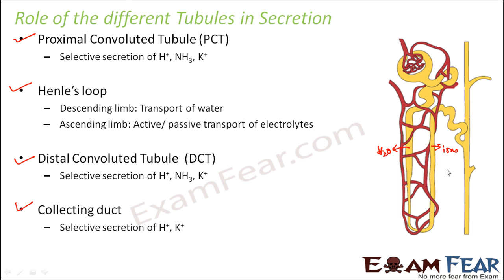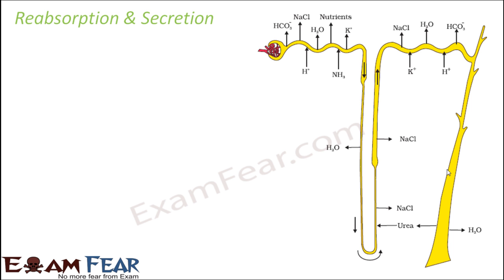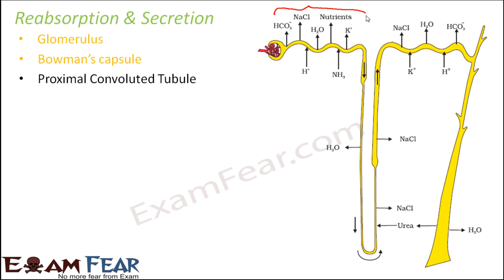Let us have a look at the process of reabsorption and secretion all together. In this picture, this is the glomerulus, next is the Bowman's capsule, and from there starts the proximal convoluted tubule. The glomerulus and Bowman's capsule do not play any role in reabsorption and secretion — filtration happens in the glomerulus, and filtrate collects in the Bowman's capsule. After that, in the PCT, maximum reabsorption happens: bicarbonate ion, sodium chloride, water, nutrients, and potassium ions are all reabsorbed.